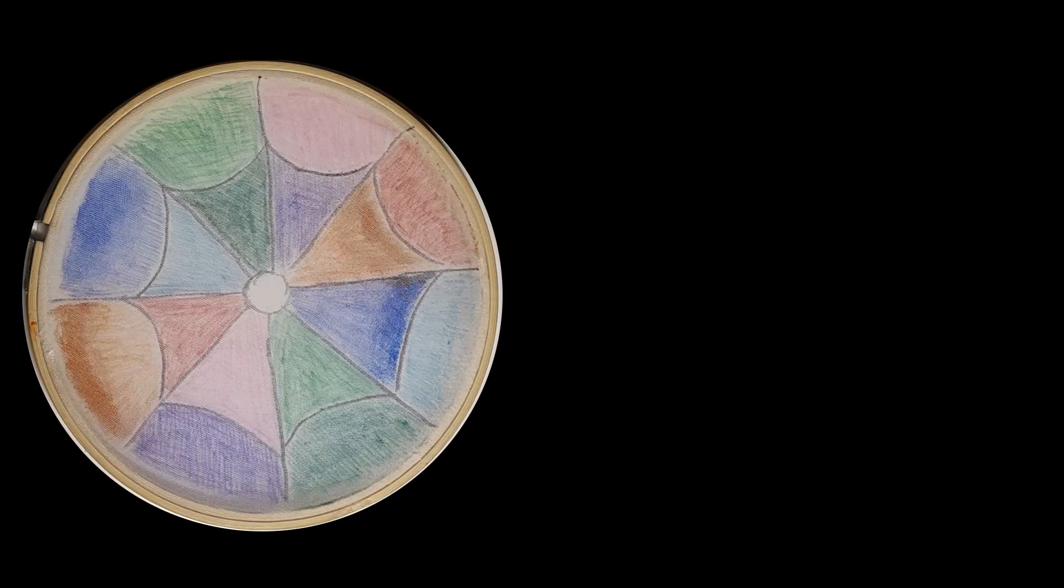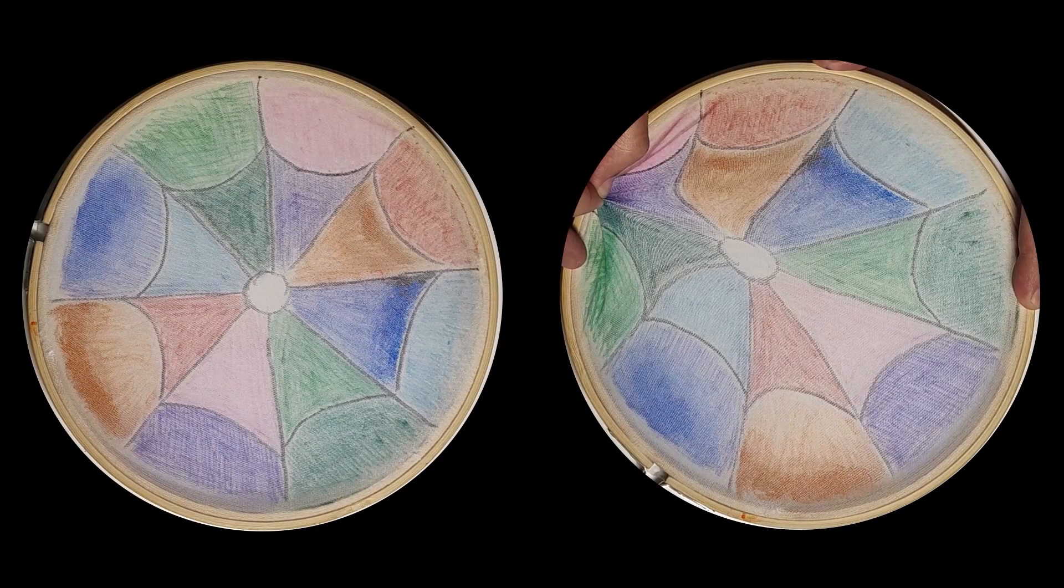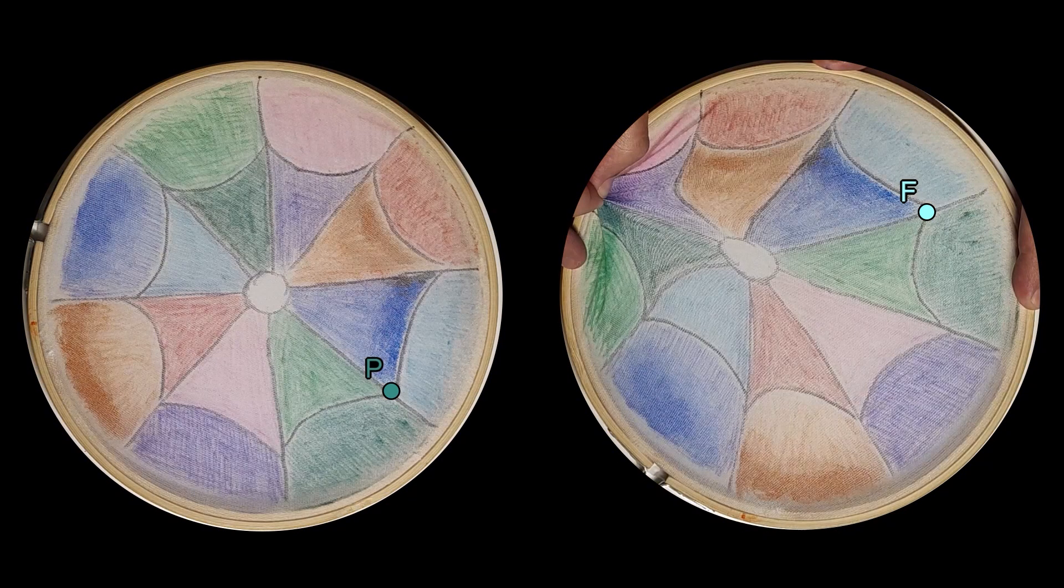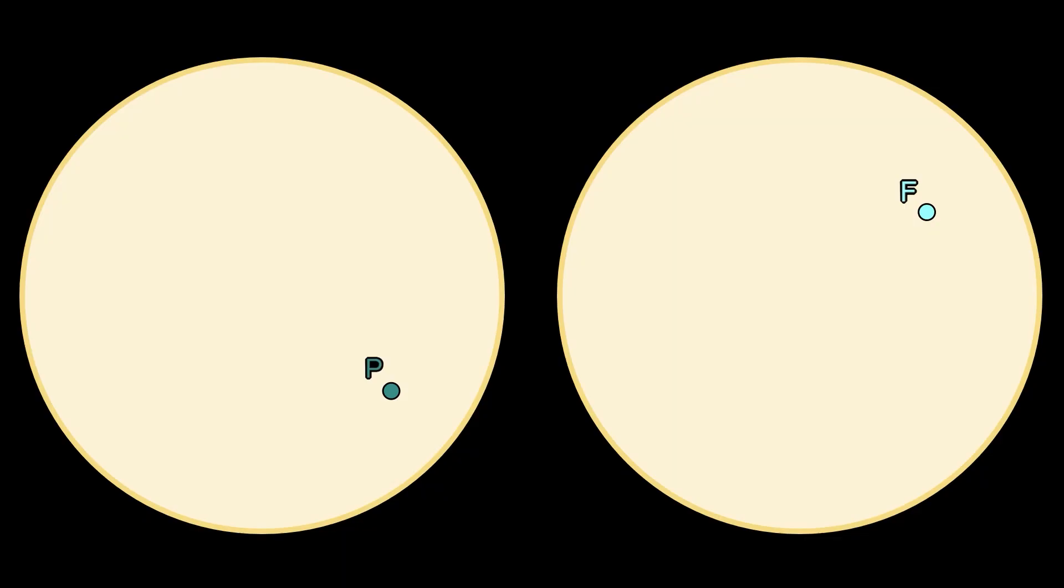Let's try to formalize the problem from a mathematical point of view. We can represent both the original and the deformed fabric as disks in the plane including their boundaries. Take a point P on the initial disk. After the deformation, it ends up at a point F on the second disk. So we have a way to associate to each point of the first disk D a point on the second disk.